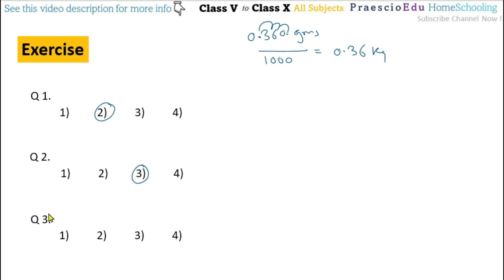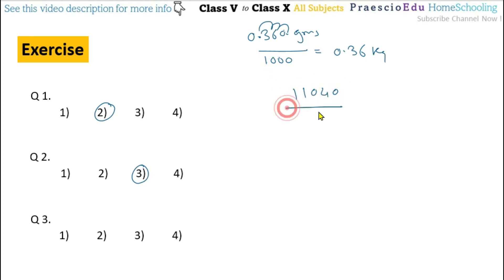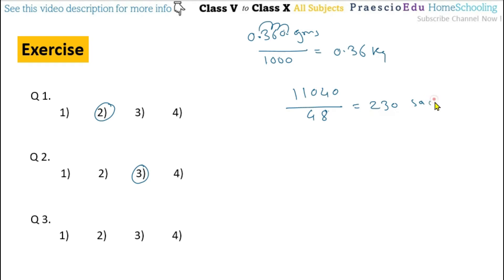Question number 3: A sack contains 48 kg of rice. How many such sacks are required to fill 11,040 kg of rice? We divide 11,040 by 48 since 1 sack holds 48 kg. After this division you get 230. So 230 sacks are required, and this is given in option number 1.